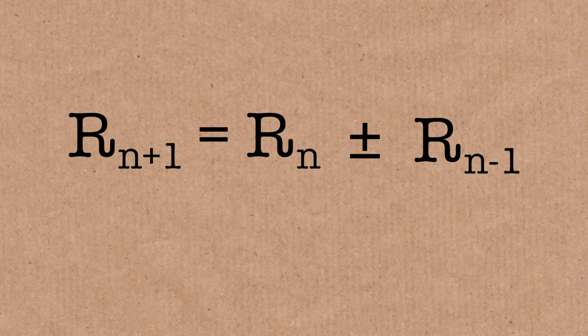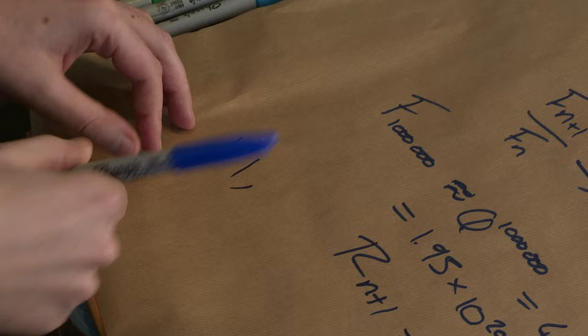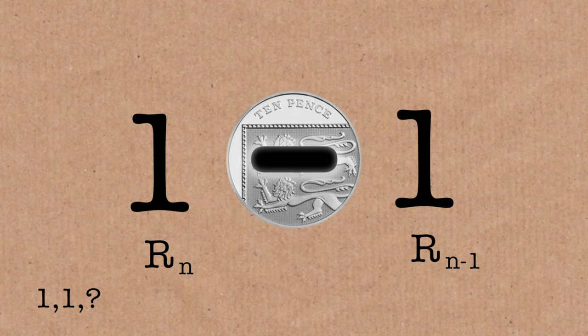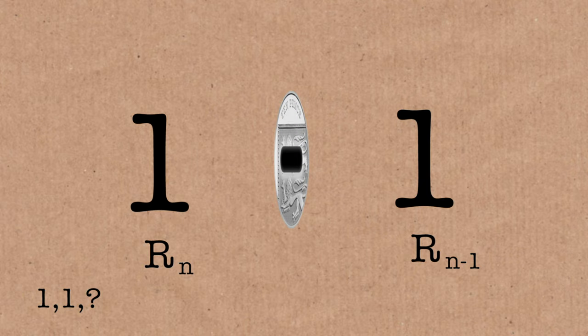Now let's use my coin to randomize this. I'm going to create a random Fibonacci sequence. The next one is going to be the sum or the difference of the previous two numbers. We're going to start in the same way, with a 1 and a 1. Now, what is the next value? We're going to use my coin to find out. I'm going to flip my coin. I might take the sum, I might take the difference.